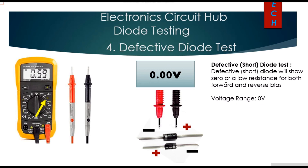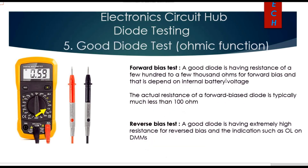If your multimeter does not have a diode test function, you can still identify faults using the ohmic method. Set your multimeter to the ohm setting to determine whether a diode is good or bad.